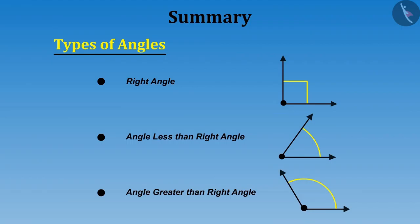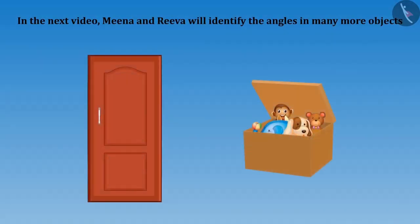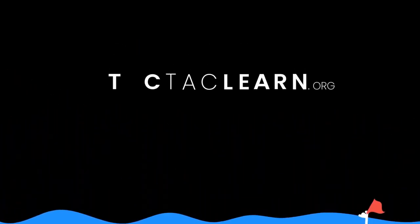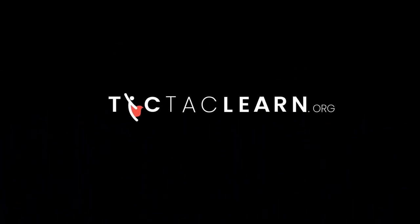Let us go home. In this video, we have learnt about three types of angles: right angle, angle less than right angle, and angle greater than right angle. Do you want to identify more angles in other objects? Then you need to watch the next video. In the next video, Meena and Riva will identify the angles in many more objects like doors and toy boxes. So let's meet in the next video. Thank you.